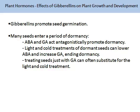Gibberellins promote seed germination. Many seeds enter a period of dormancy, and it is the combination of hormones that break this dormancy. ABA or abscisic acid and GA act antagonistically to promote dormancy. Light and cold treatments of dormant seeds can lower ABA and increase GA concentrations, ending dormancy. Therefore, treating seeds with just GA can often substitute for the light and cold treatment.